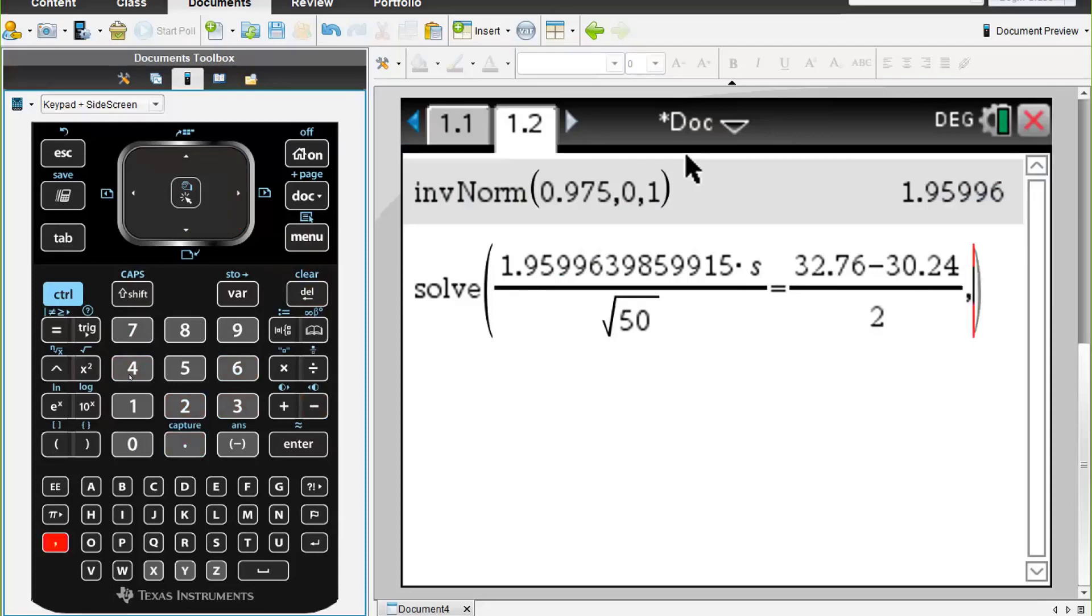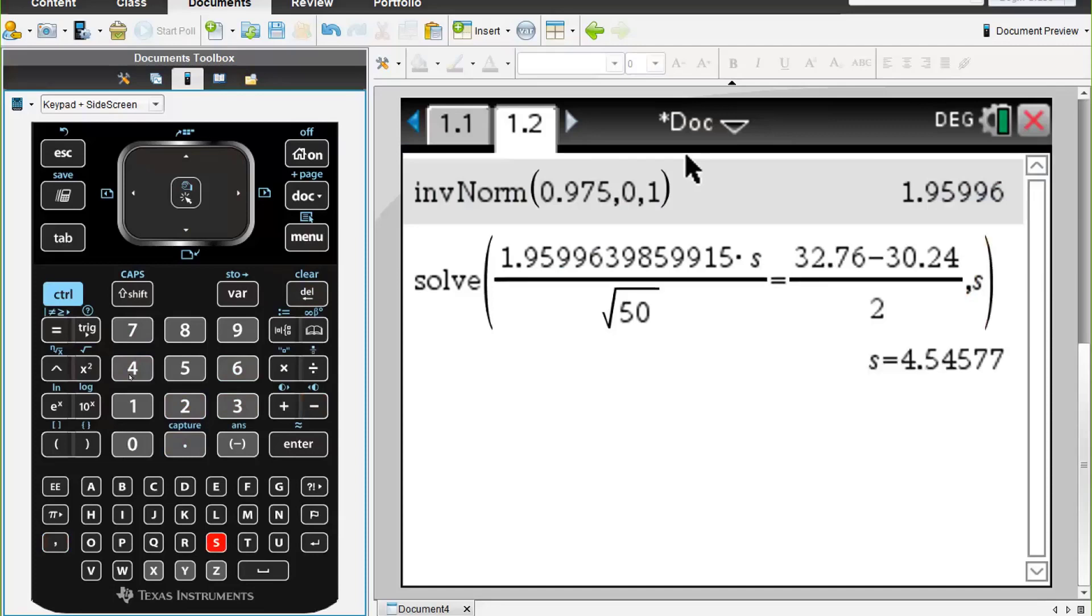Comma, and we're solving for s. So we find that our standard deviation, which we had to calculate to two decimal places, would be 4.55 centimeters for these King Charles Cavaliers.